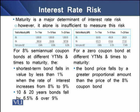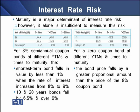The shortest-term bond falls in value by less than 1% — for a 1-year term, the fall in price is only 0.94%. When the interest rate increases from 8% to 9%, the two bonds with longer maturities of 10 years and 20 years fall by 6.5% and over 9% respectively. In the right panel we have a zero coupon bond with different YTMs and times to maturity, where bond prices fall by a greater proportional amount than prices of the 8% coupon bond: a 0.96% decline for 1 year, and 9.15% and 17.46% declines for 20 years — much higher than the 8% coupon bond.